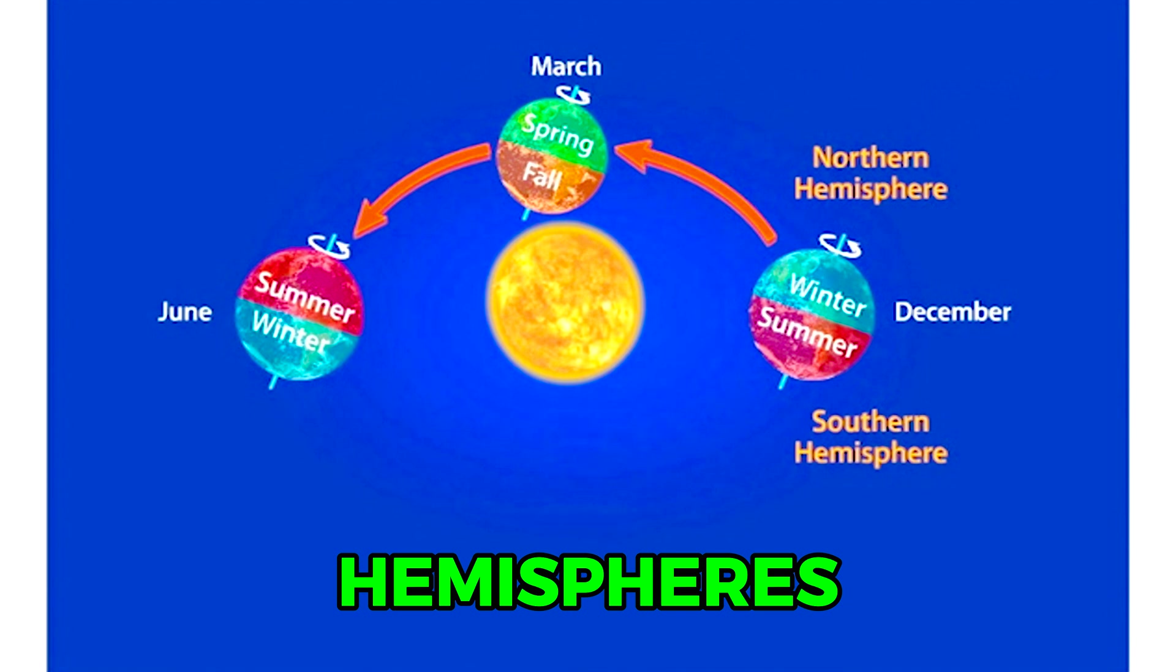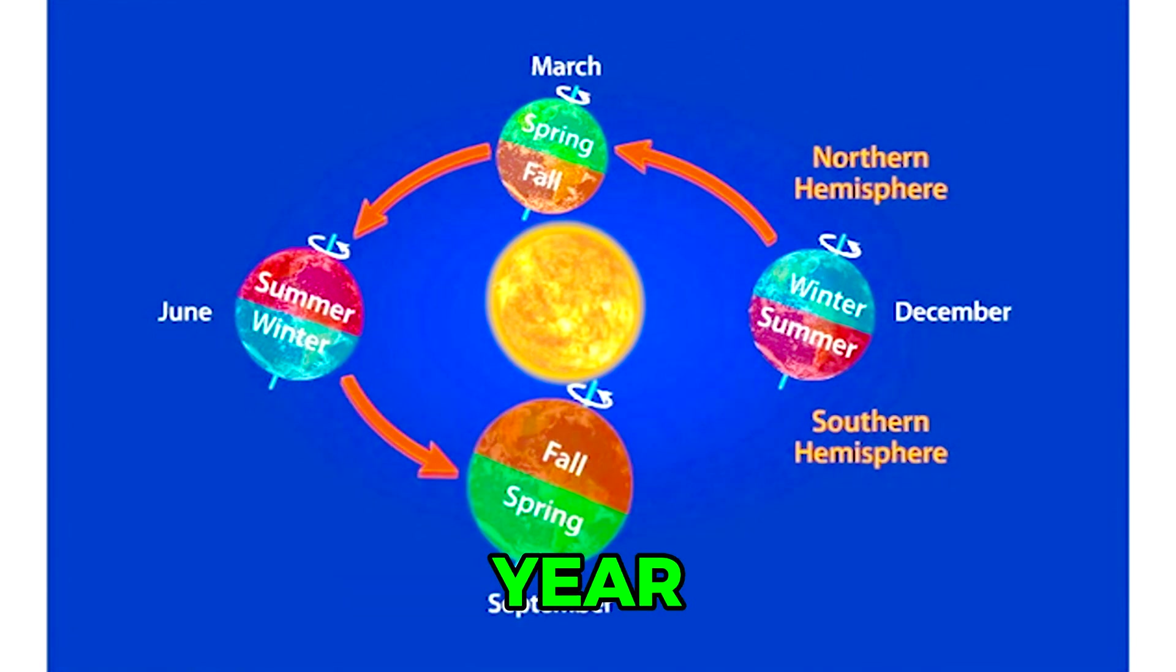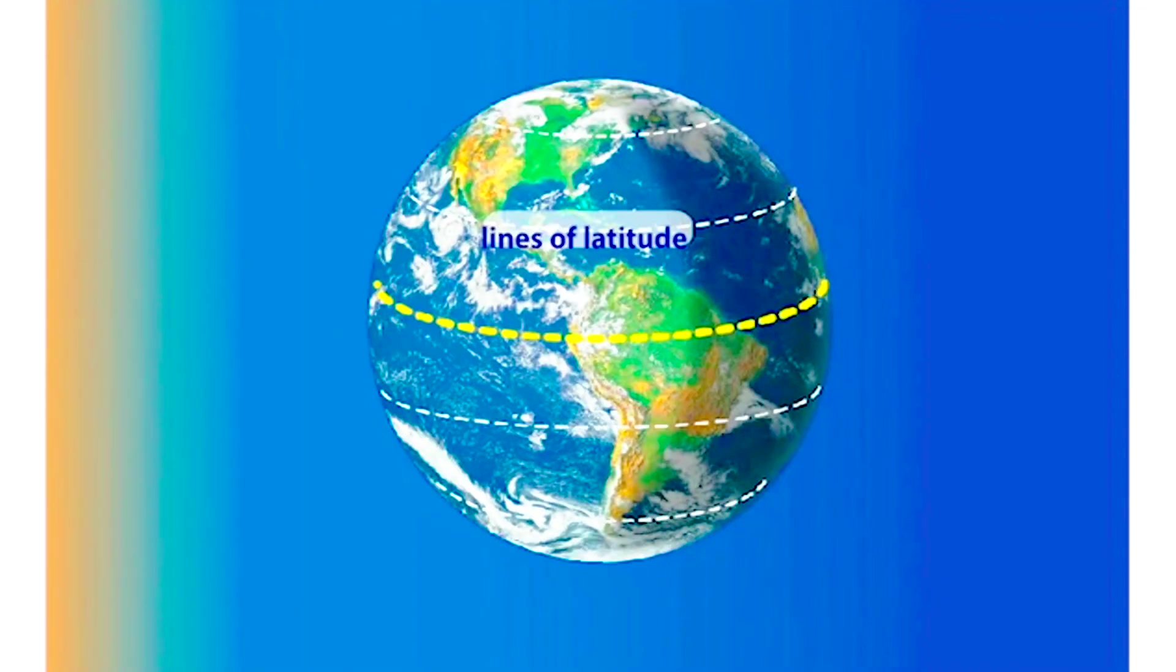The northern and southern hemispheres experience opposite seasons throughout the year. Latitude is a key factor affecting the climate in a particular location on Earth.